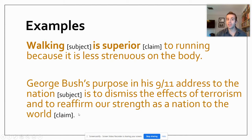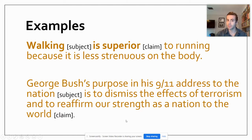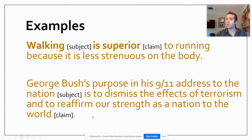There's a two-part claim: what he's doing with his purpose in this speech is to dismiss the effects of terrorism — saying, like, 'you tried to shake us, but you didn't' — and then to reaffirm our strength, not just to the American people, but as a nation to the rest of the world watching the United States respond to these terrorist attacks. This is arguable because someone could say his purpose was slightly different. But it all comes down to how we can defend and back up this idea with evidence.